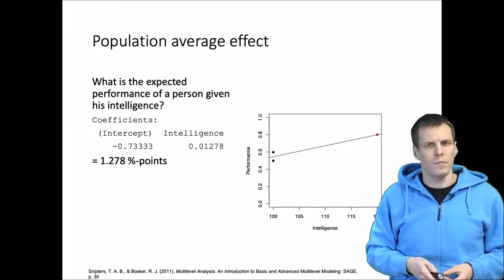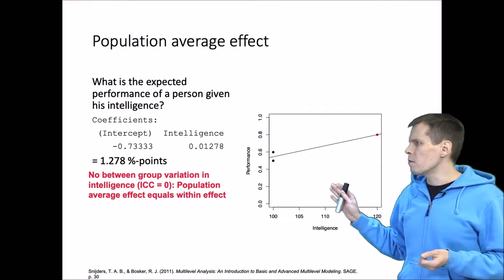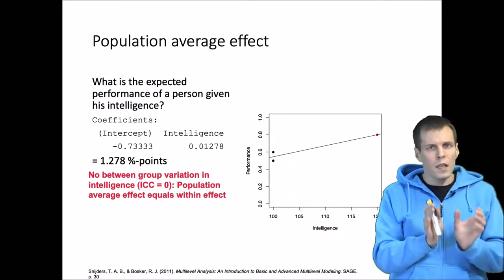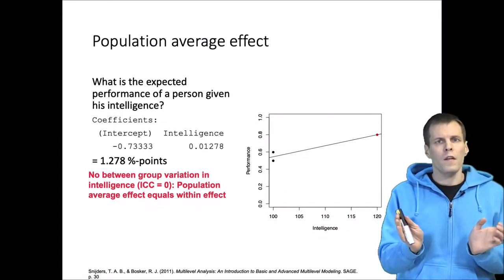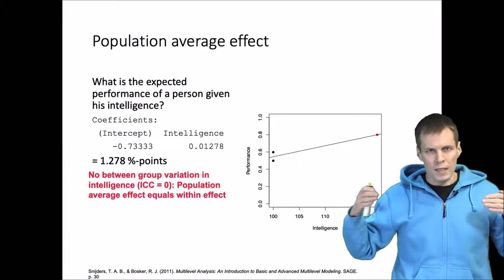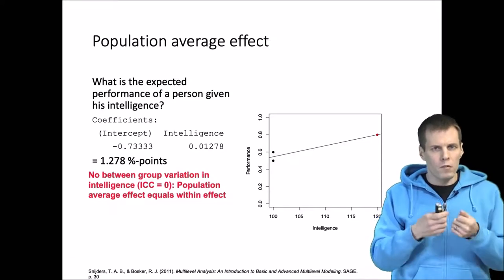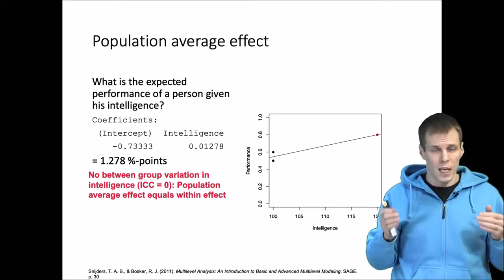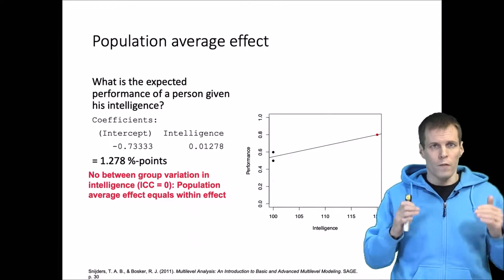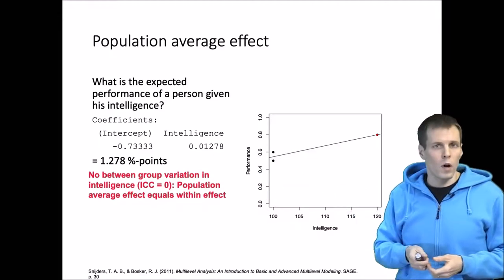So how do we actually get that? We can think through different scenarios. What if there were no between-group differences in intelligence — so all groups are equally intelligent on average? Then the contextual effect would be the same for everybody, and how well an individual performs would only depend on that person's intelligence, not on which team they're on. If there is no variation between groups, the population average effect equals the within effect.